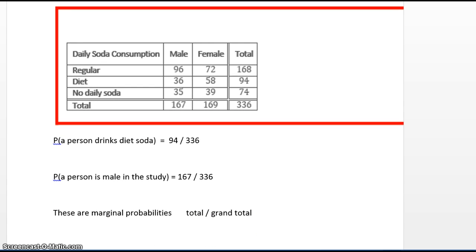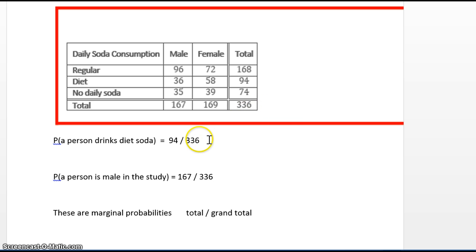What is the probability a person drinks diet soda on a daily basis? We're not looking at just men or just women — we're looking at all the people in the survey. That's the grand total of 336, which goes in the denominator. Out of all the people, how many drink diet soda? That's 94, which goes in the numerator.